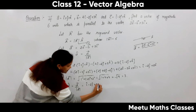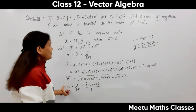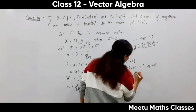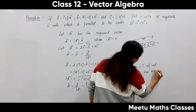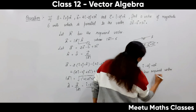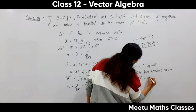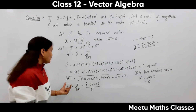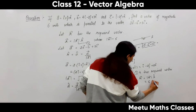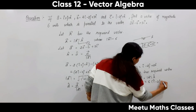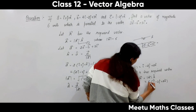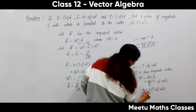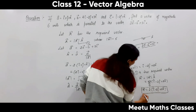So the direction vector along D is D divided by its magnitude: i minus 2j plus 2k, all divided by 3. The required vector R equals the magnitude of R times R-hat. Magnitude of R is 6, and R-hat equals D-hat, which is (i minus 2j plus 2k) divided by 3. So R equals 6 times (i minus 2j plus 2k) divided by 3, which gives 2 times (i minus 2j plus 2k). This is our required vector.